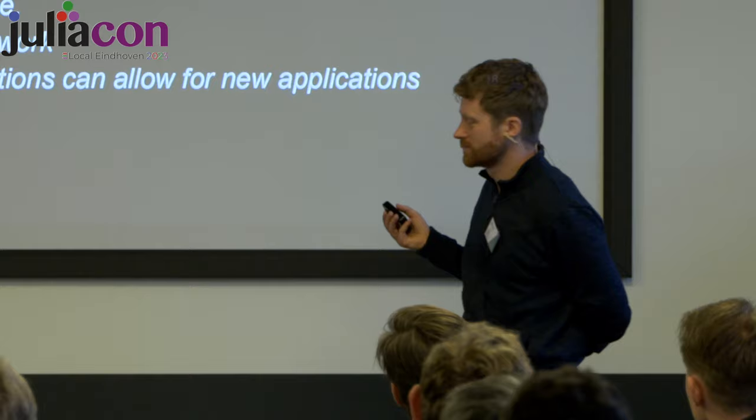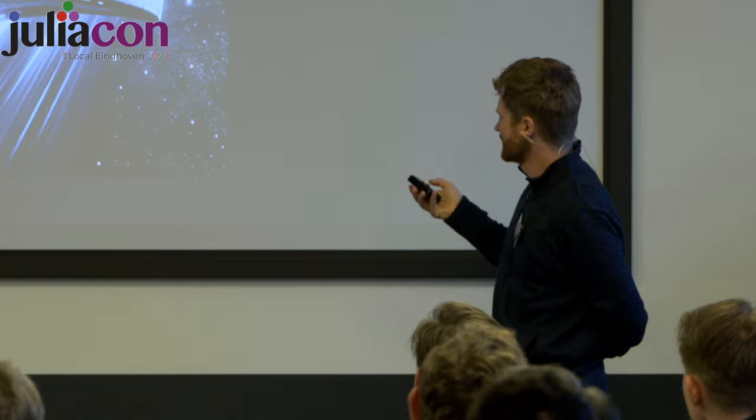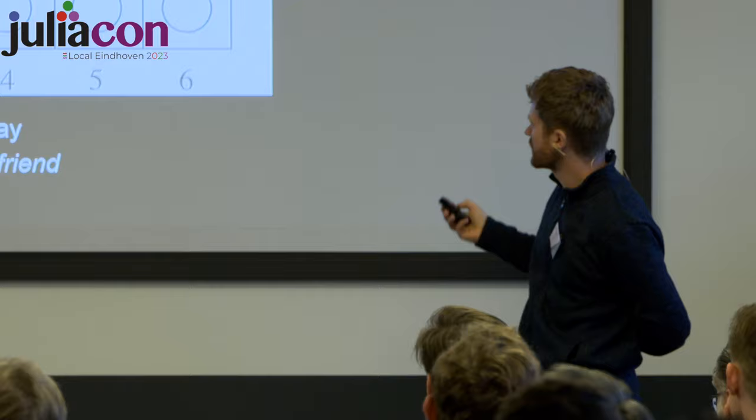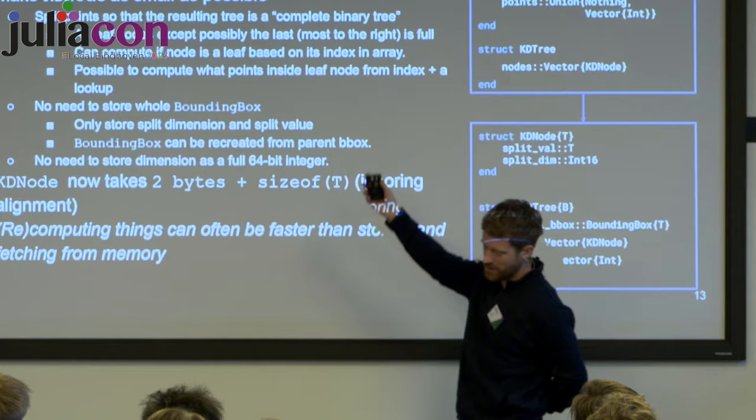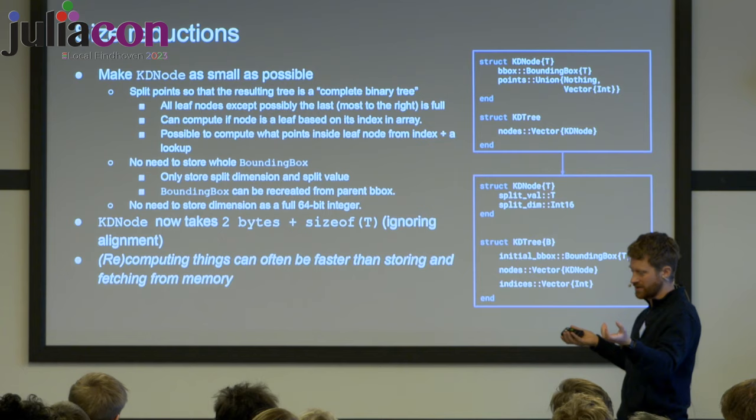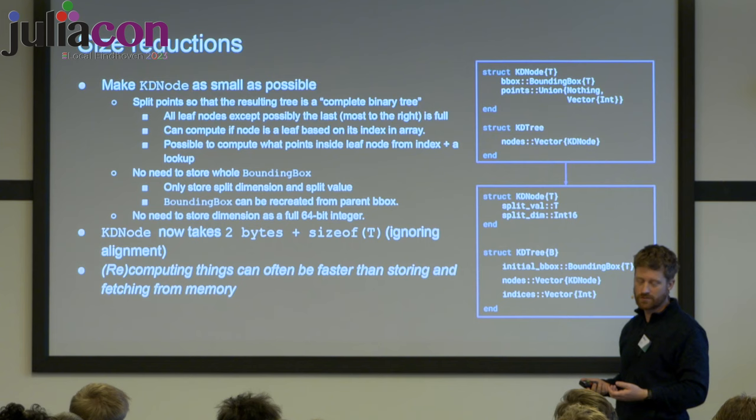Question: when storing the KD tree in an array, are all leaves at the same depth? If you split points so the tree is a complete binary tree, you might not have all leaves at exactly the same depth, but the maximum difference is one level. So you won't have one very deep branch and a very short one on the other side.